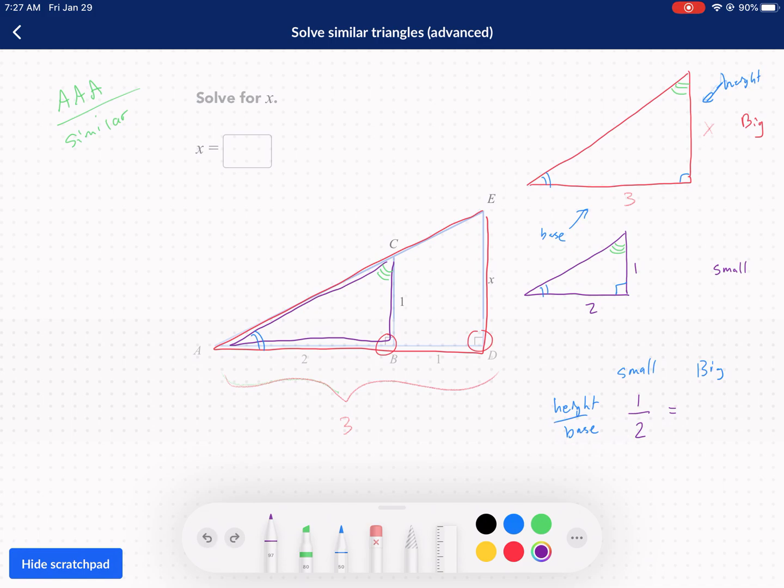And I compared the height on top to the base on the bottom. So if I do the height over the base for the small triangle, I also have to do the same thing for the big triangle. Now my height for the big triangle is x. What's my base? My base is 3. So put that over 3. It's set up now. Here's my big triangle x over 3 height to the base. Here's my small triangle height over base 1 to 2 and now I'm ready to solve.